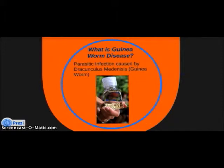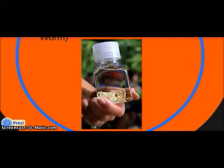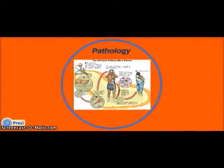The guinea worm is a white, slender parasite which, once ingested, grows and matures within the host's body. As the worm grows, it mates with one of the opposite sex within the body. When the guinea worm is ready to reproduce, it will expose itself through a painful blister.